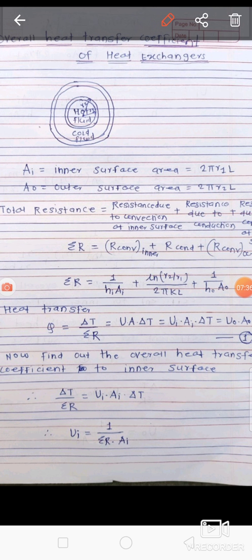So the total resistance ΣR = 1/(Hi·Ai) + ln(r2/r1)/(2πKL) + 1/(Ho·Ao). The convection resistance at the outer surface is 1/(Ho·Ao), where Ho is the outer heat transfer coefficient and Ao is the outer surface area.